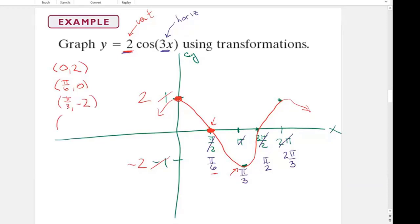And then how about this point? Pi over two zero. Oh wait, zero, that's right. Okay.